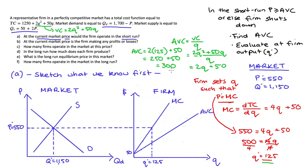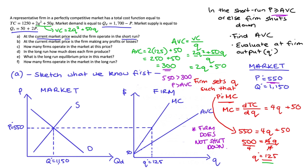Checking the condition: our price is 550 and our AVC is 300. Since 550 is greater than 300, price exceeds average variable cost, so the firm will not shut down at a price of 550. Graphically, when the firm produces 125 units the AVC is 300, which is less than the price of 550. So the answer to part A is that the firm operates in the short run and will not shut down.